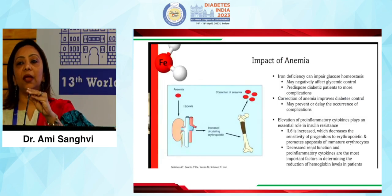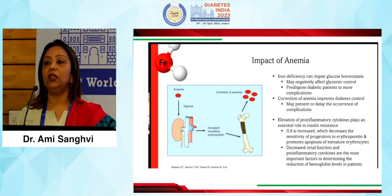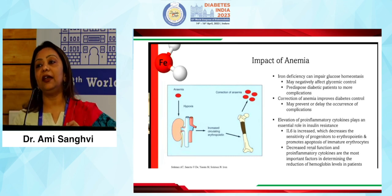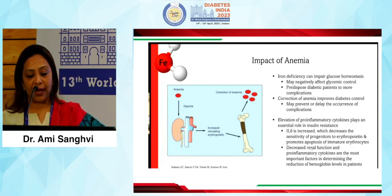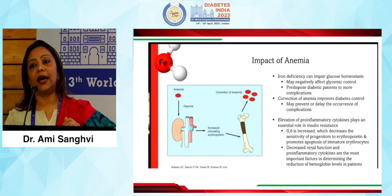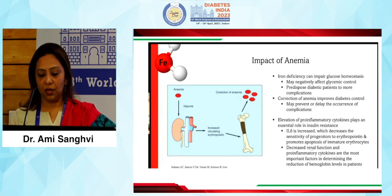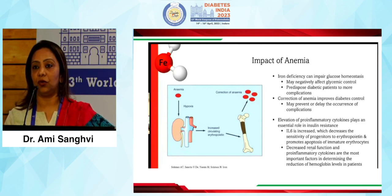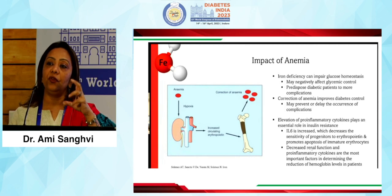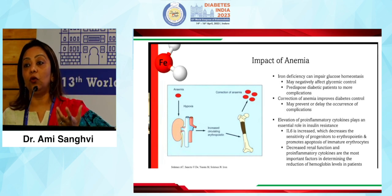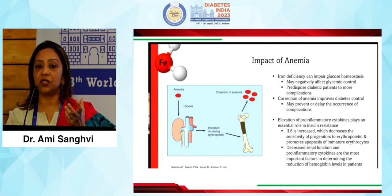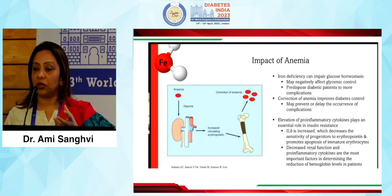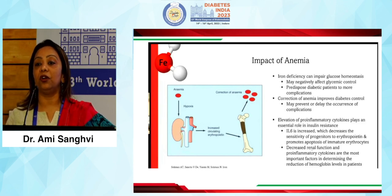Looking at what impact anemia has on glucose homeostasis: iron deficiency can impair glucose regulation, predisposing and complicating diabetic patients. Correction of anemia actually improves diabetic outcomes. The paradox here is that giving iron overload to a patient actually increases the risk of diabetes by disrupting the beta cells through oxidative stress and impairing mitochondrial function.